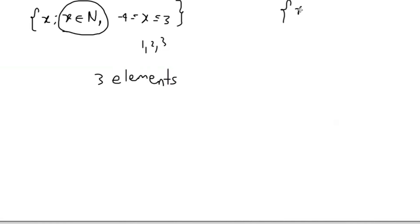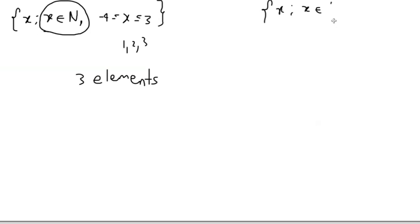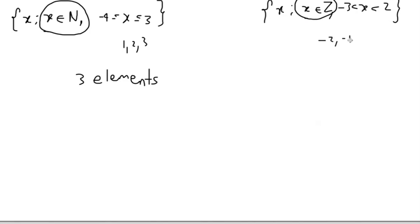Now I'm going to write another set builder and discuss how many elements are in this set. x is an element of integers, and we are going to look for all the integers in this range: x greater than negative 3 but less than 2. We won't use negative 3 because it didn't say equal to, and we won't use 2 for the same reason. Because of that, we have 4 elements.